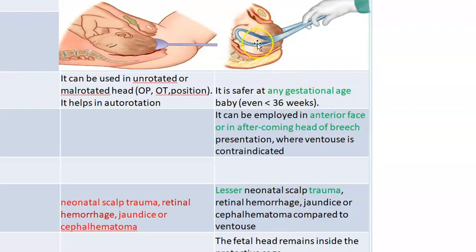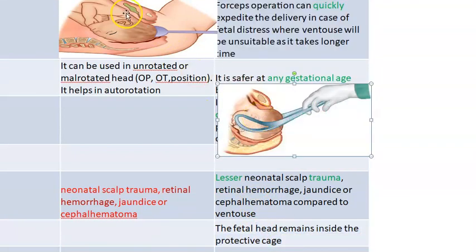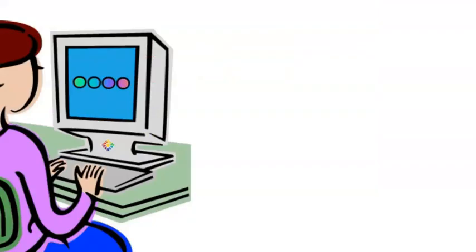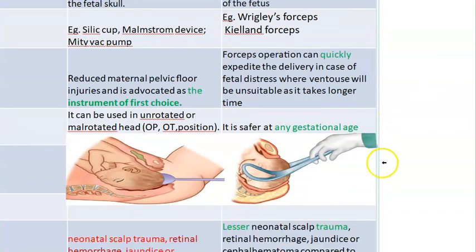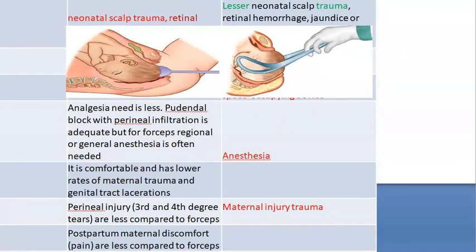With forceps, there is less scalp trauma because you are not directly holding the scalp - you are encompassing the entire head. The fetal head remains in a protective cage with forceps. However, the thing with forceps is it is a space-occupying device - it has to go inside and hold on both sides, whereas vacuum is just one-point entry. Baby-wise, forceps is better.